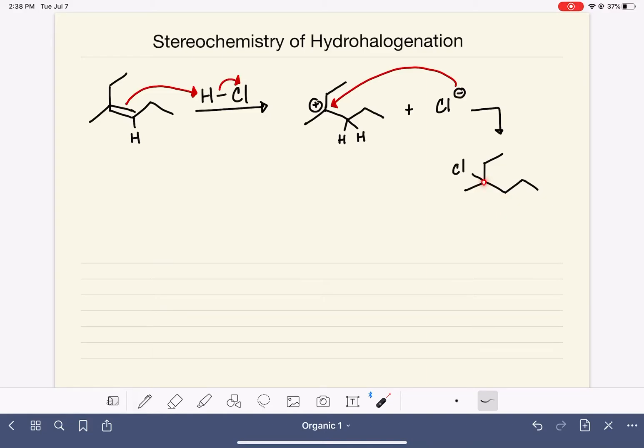This carbon right here has a bond to a methyl, a chlorine, an ethyl, and a propyl group, which means that this carbon right here has become chiral. This carbon has two bonds to hydrogen, which makes it instantly achiral. So this carbon that has become chiral, we need to ask ourselves, what is the stereochemistry of that chiral carbon? Is it an R or is it an S?